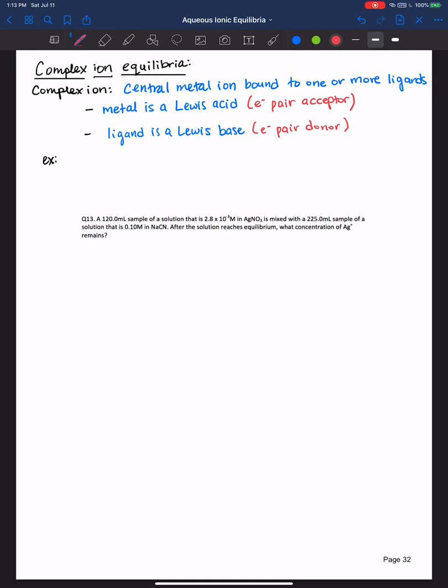Now, the types of bonds that are formed between this Lewis acid and this Lewis base, these metal and ligands, is not a covalent bond, nor is it an ionic bond. It's called a coordination bond.